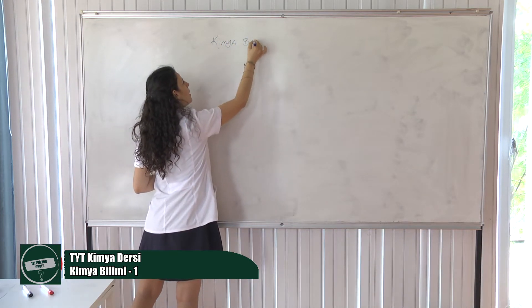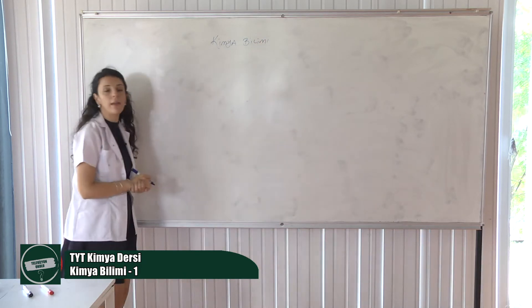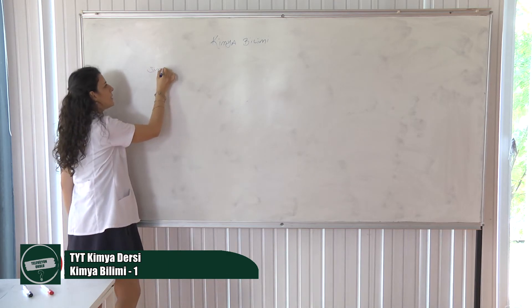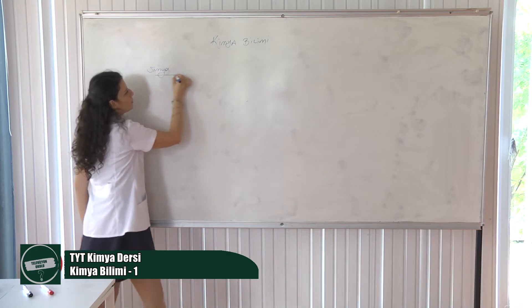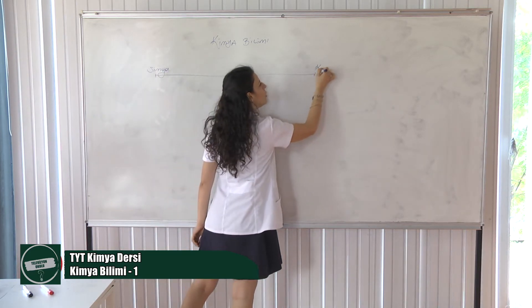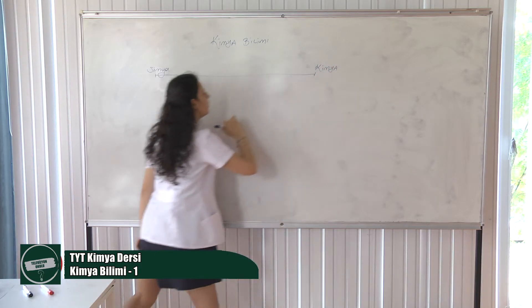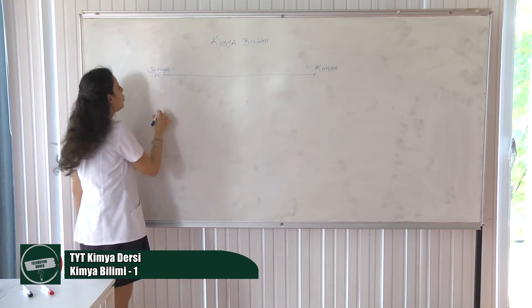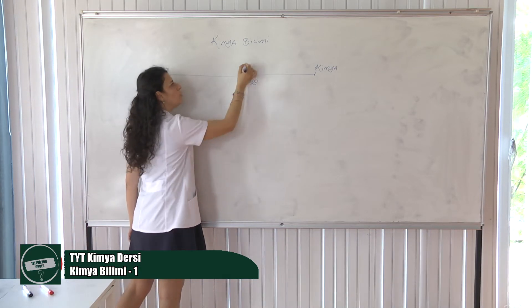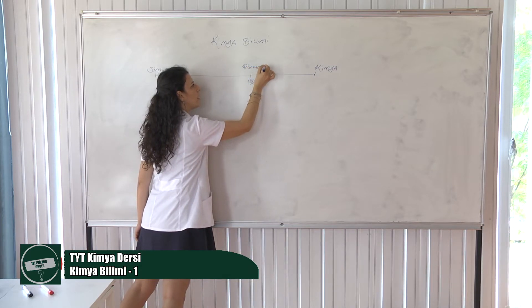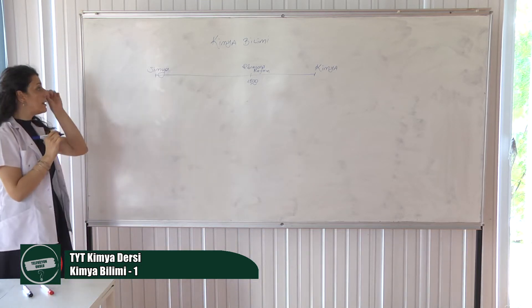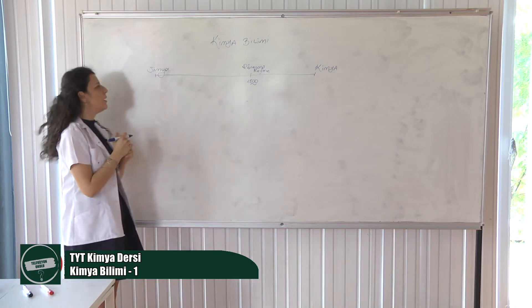Kimya bilimi bir anda meydana gelmedi, tabii ki hiçbir bilim gibi. Bir süreçle meydana geldi. Bu nasıl meydana geldi? Simya'dan başladı. Milattan önceki yıllarda başladı. Milattan önceden bugüne kadar gelen süreçte kimya oluştu. 1800'lü yıllarda Rönesans reform hareketleriyle simya uğraşı kimya bilimine dönüştü diyoruz.